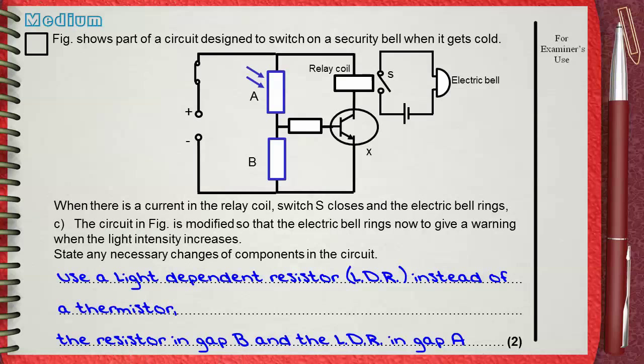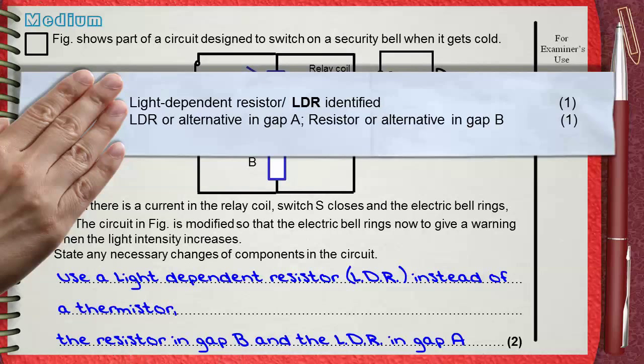Two marks for this question. Light-dependent resistor or you can say LDR identified. This is one mark. The second mark is for LDR or alternative is in Gap A and the resistor or alternative in Gap B.